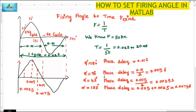Now let us get the phase delay value for 90 degrees. This angle is midway between 0 and 180 degrees. To get the phase delay, I am dividing 0.01 by 2, which gives the time period corresponding to 90 degrees. The value is 0.005 seconds. This is the phase delay for alpha equal to 90 degrees.